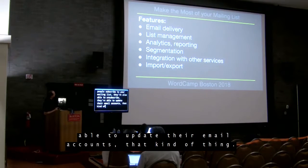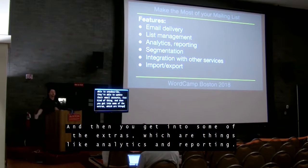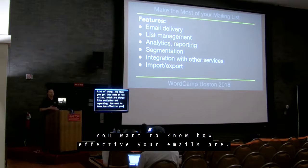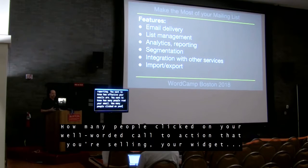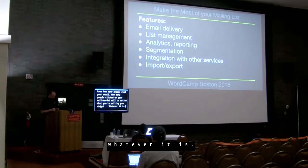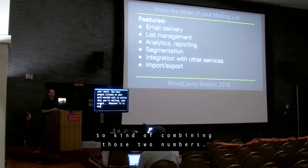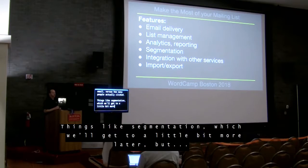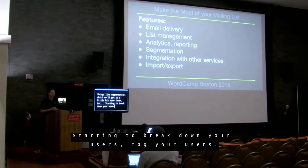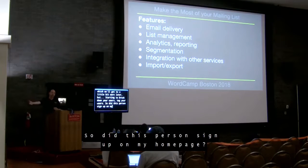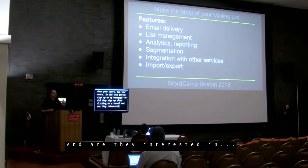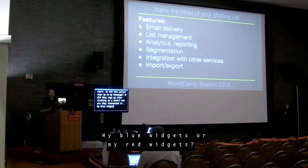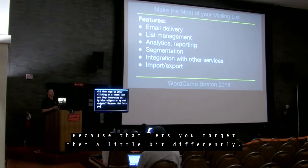Then you get into extras like analytics and reporting — you want to know how effective your emails are, how many people read your email, how many people clicked on your call to action. And then conversions, combining those two numbers. Things like segmentation — breaking down your users, tagging them: did this person sign up on my homepage or after clicking on a tweet? Are they interested in my blue widgets or my red widgets? That lets you target them a little bit differently.